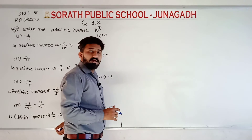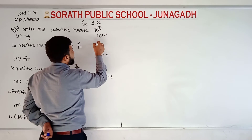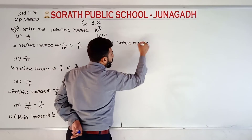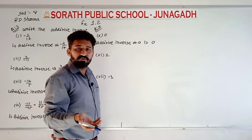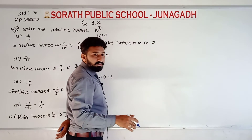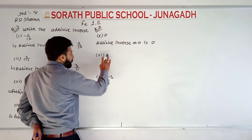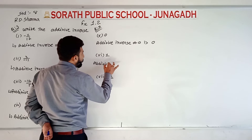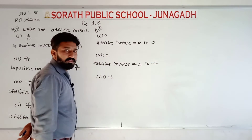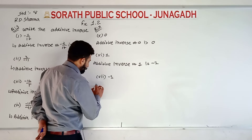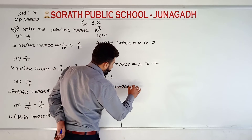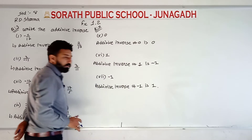The additive inverse of zero is always zero, because zero is neutral — it is neither a positive integer nor a negative integer. The additive inverse of 1 is minus 1, and the additive inverse of minus 1 is 1 — always the opposite sign.